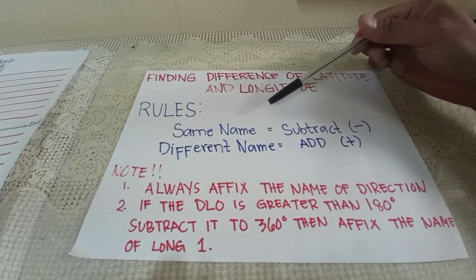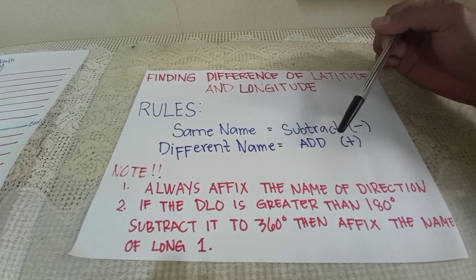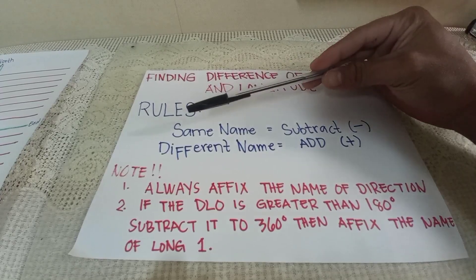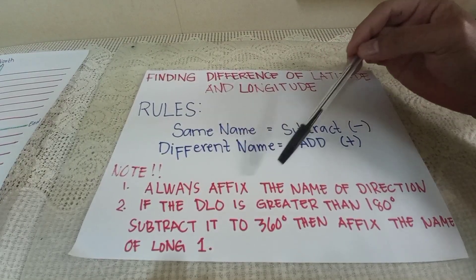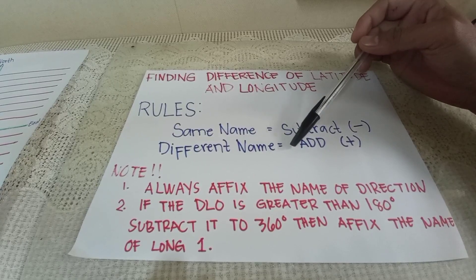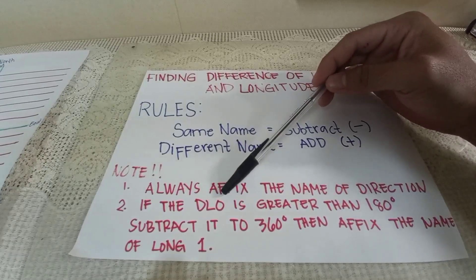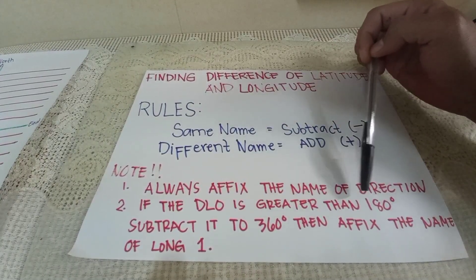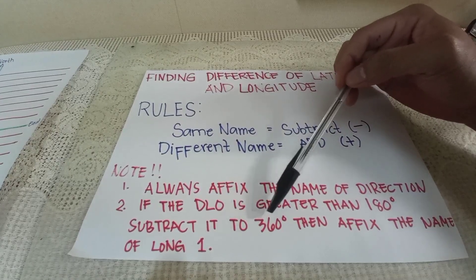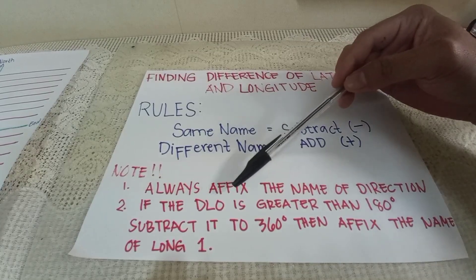Like if latitude 1 is south and latitude 2 is north, you have to add to find the difference of latitude. Note 2: if the difference of longitude is greater than or equal to 180 degrees, you have to subtract it from 360 degrees, then affix the name of longitude 1.